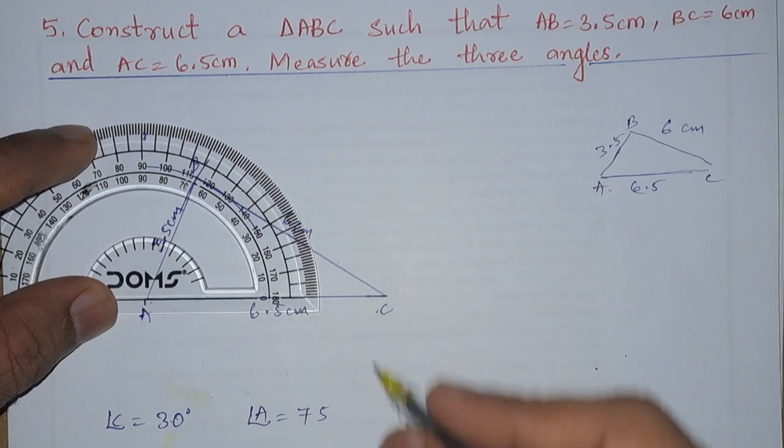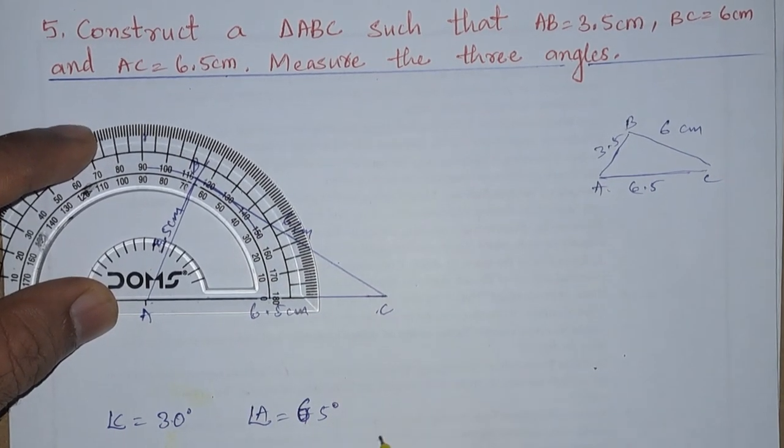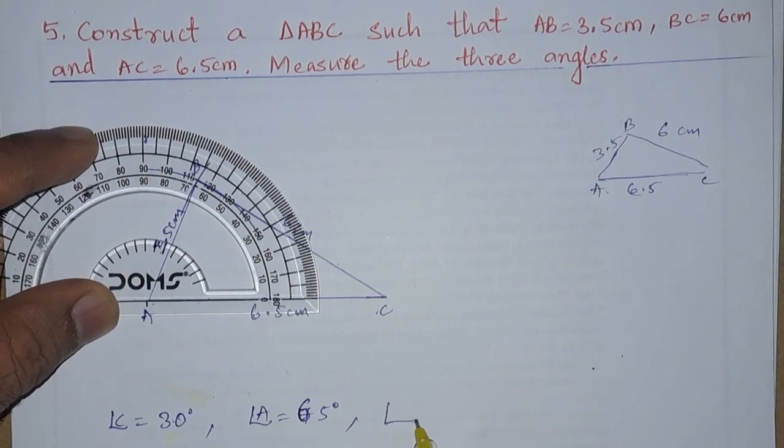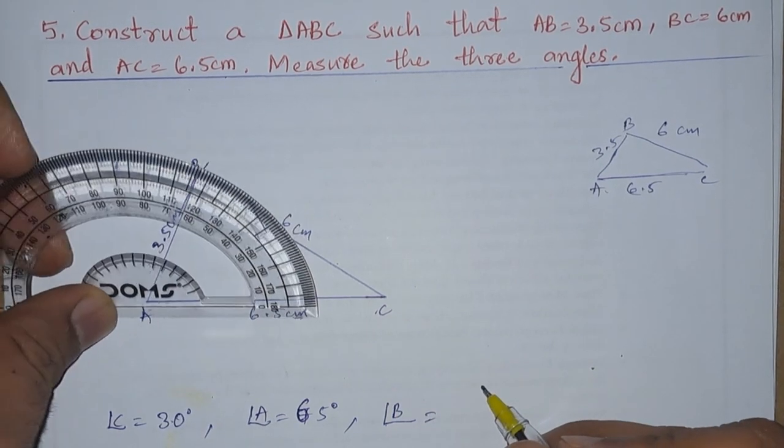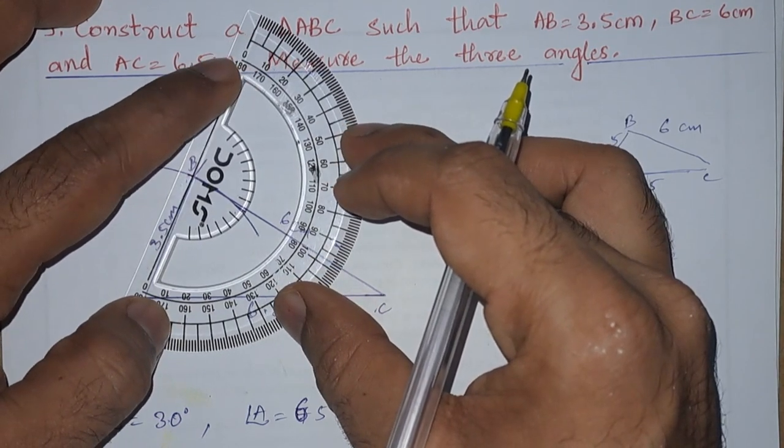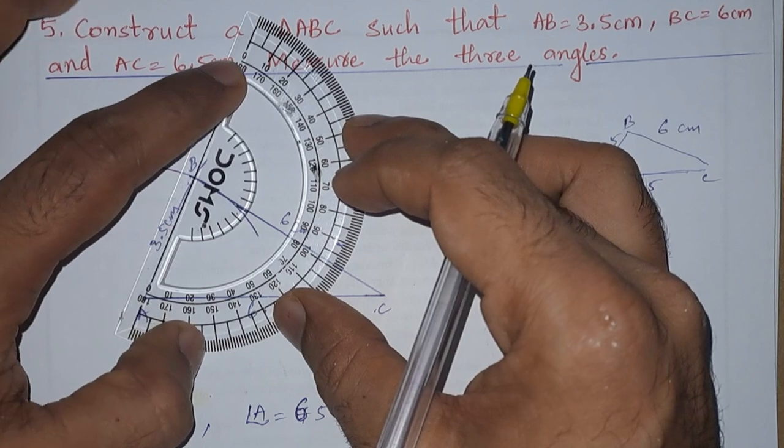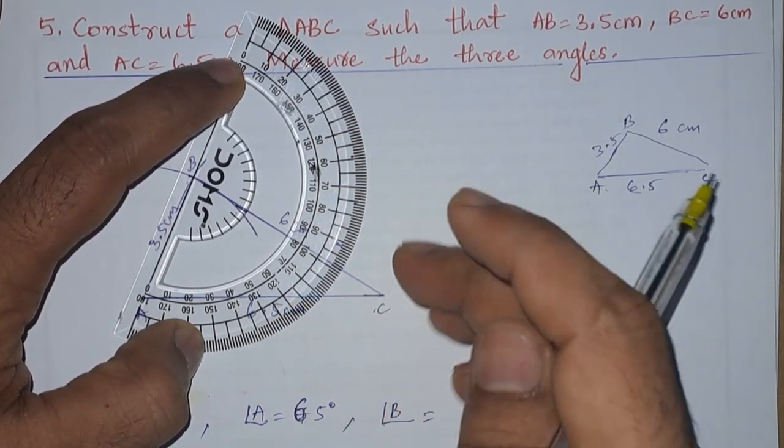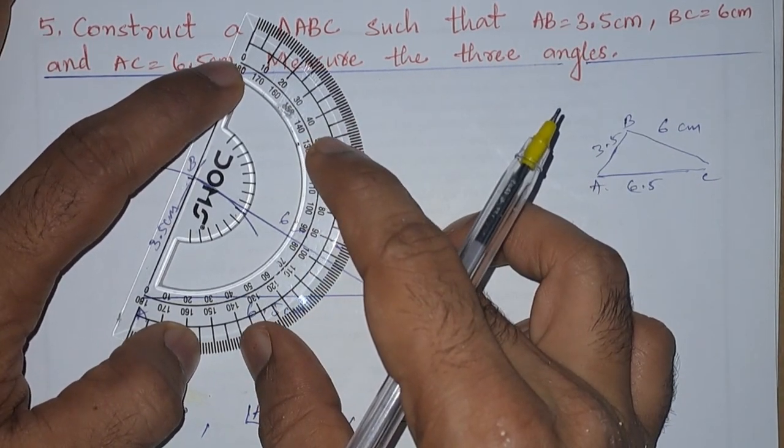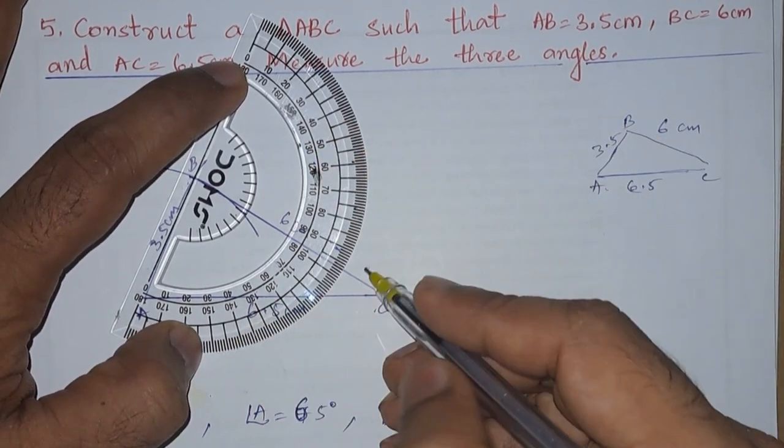So angle A is 65 degrees. Next is angle B. So angle B, we will see from here. We need to put this point over B. Now here we can see the angle B is approximately 85.